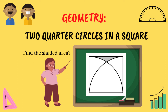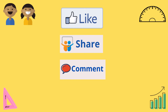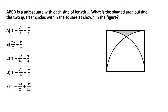Welcome to another new video of interesting math problems on our channel Math Solutions For You. Please do like, share, comment, and don't forget to subscribe. A B C D is a unit square with each side of length one. What is the shaded area outside the two quarter circles within the square as shown in the figure? We have the square with side one and two quarter circles within it. Let's label the shaded area — that's the area we're asked to find — as x.